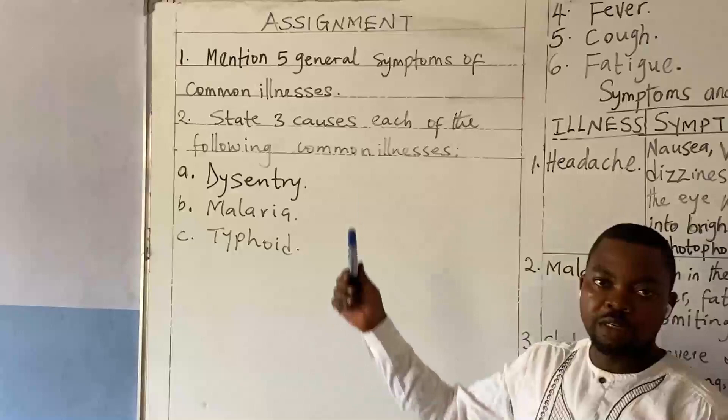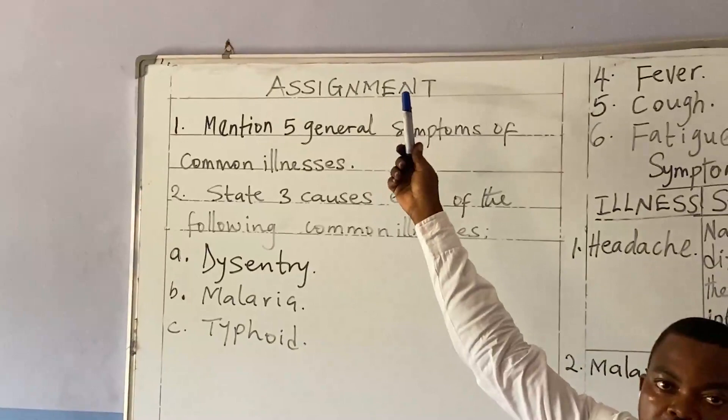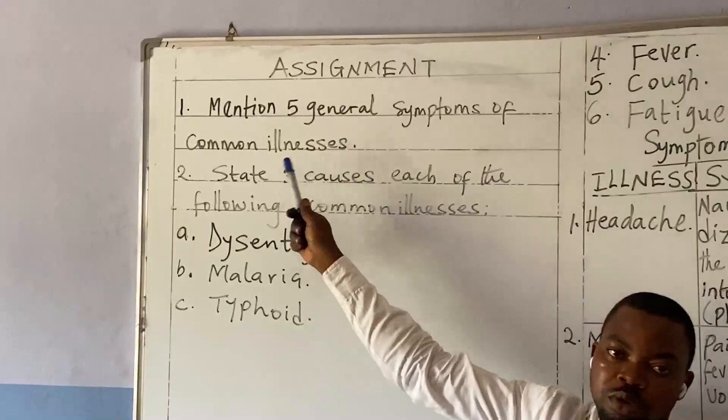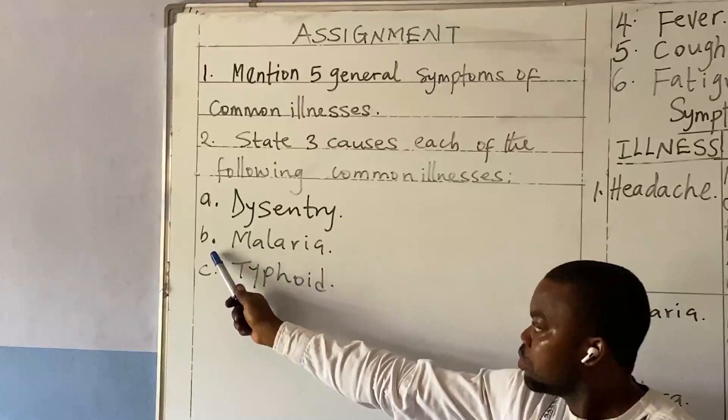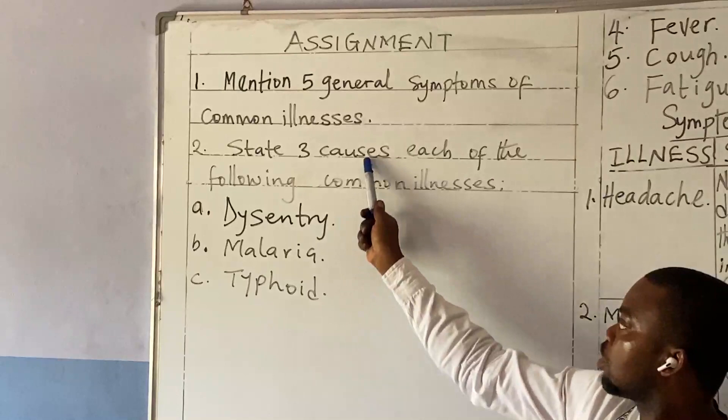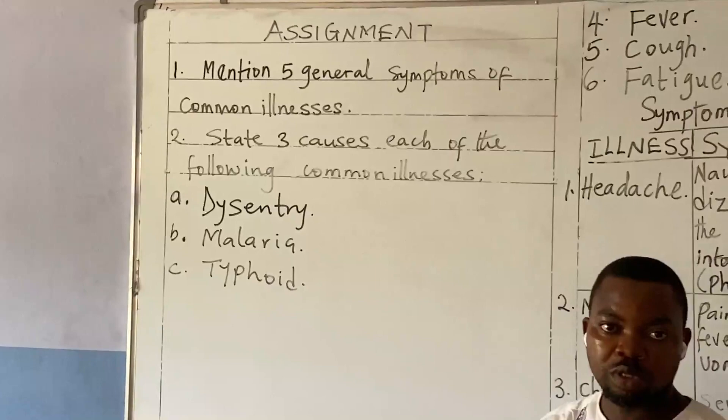For your assignment, you've learned so you must do some work at home. One, mention five general symptoms of common illnesses. Two, state three causes each of the following common illnesses: A. Dysentery — three causes. B. Malaria — three causes. C. Typhoid — three causes.